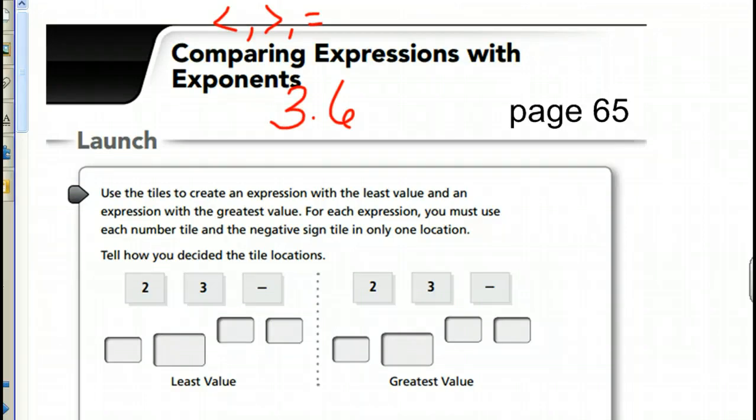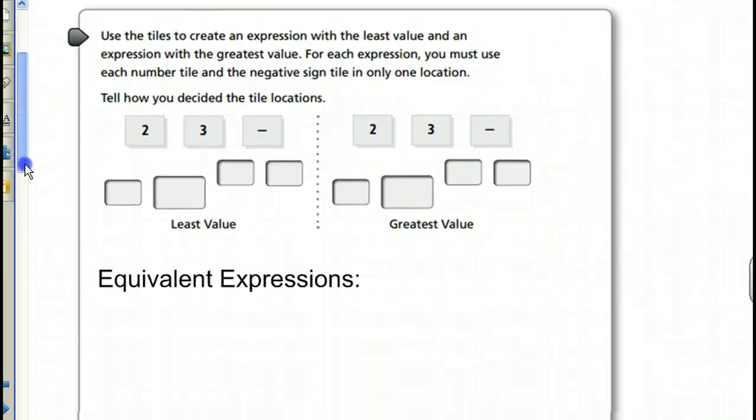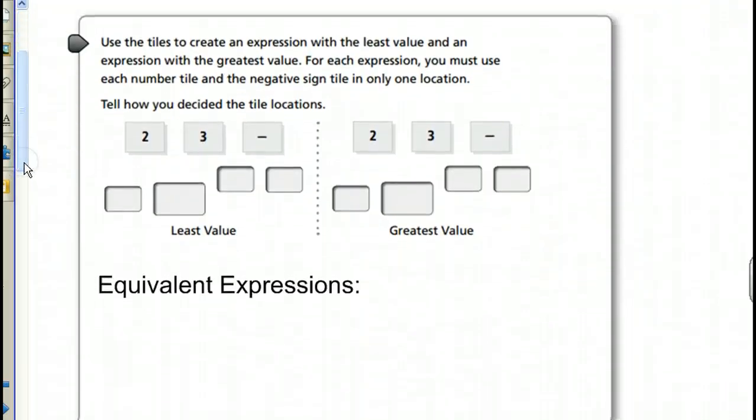So, for our launch, they want us to use these numbers and this sign, negative, this number, this sign, to make the least possible value, and then to make the greatest possible value.